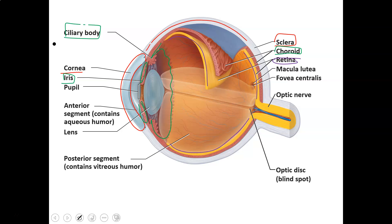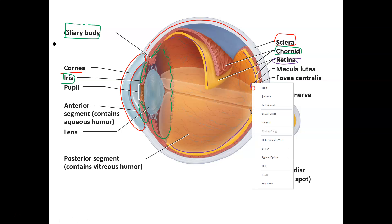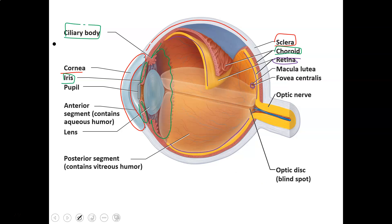Cones, on the other hand, need bright light in order to work, but they can differentiate different wavelengths. Most of the cones in your eye are found in a little structure called the fovea centralis, which in Latin means central focal point. That's where the lens is supposed to focus the image so you can see it the best.